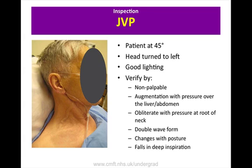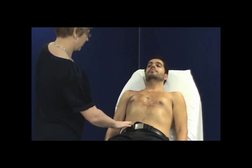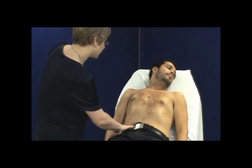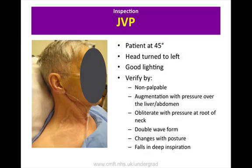When assessing the JVP, the patient should be sitting at 45 degrees with their head resting back on a pillow and turned slightly to the left. The right internal jugular vein should just be visible between the two heads of the sternocleidomastoid. The JVP is raised if the vertical height of the pulse above the sternal angle is greater than 4 cm. The JVP should be impalpable and obliterated by pressure at the root of the neck, and should fall during inspiration and rise during expiration. Pressing over the liver for up to 15 seconds should elicit a rise in the JVP — this is known as the hepatojugular reflux.